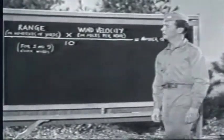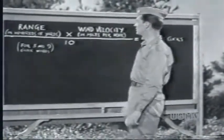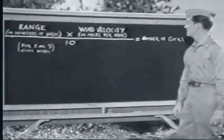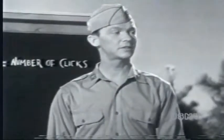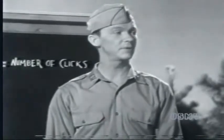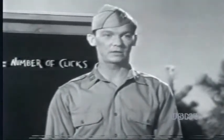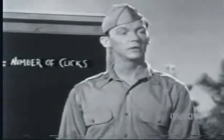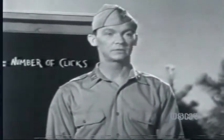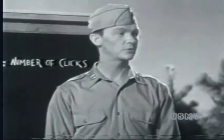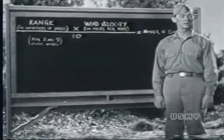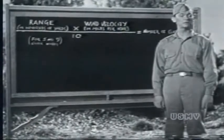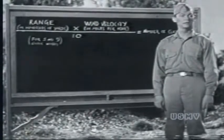Here's the one-click windage rule: range in hundreds of yards times wind velocity in miles per hour divided by ten equals the number of clicks of wind allowance you've got to take for three and nine o'clock winds. When it says the range in hundreds of yards, all it means is that you throw the two zeroes away — 300 becomes three, 500 becomes five, 200 becomes two. The wind in miles per hour will turn out to be some perfectly harmless number like 8, 12, 18, or 20. It'll be about as hard as multiplying three times fifteen.